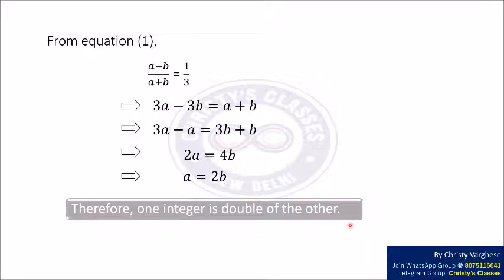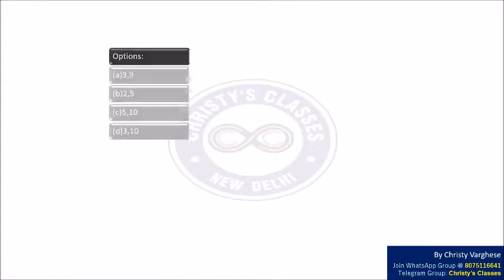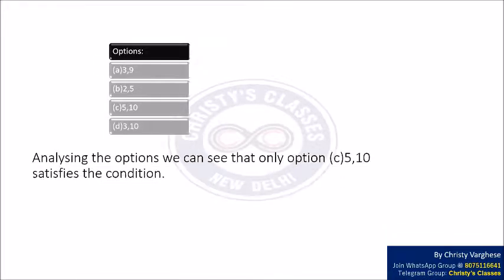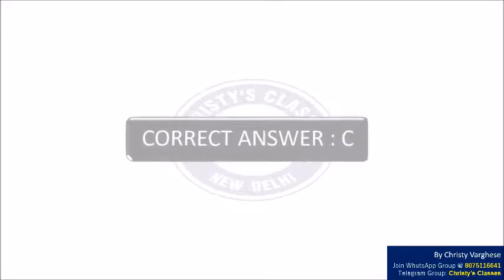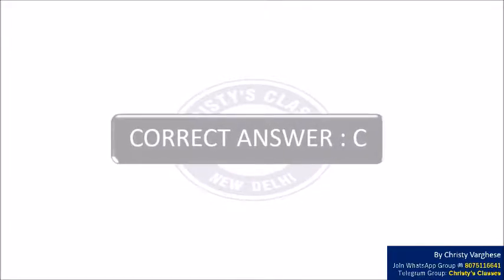That is, the two integers that we are going to find satisfy the condition that one integer is the double of the other. On analyzing the options, we can see that only option C satisfies our required condition that one integer is the double of the other. Since 10 is the double of 5, we can say that the required two integers are 5 and 10. So the correct answer is option C.